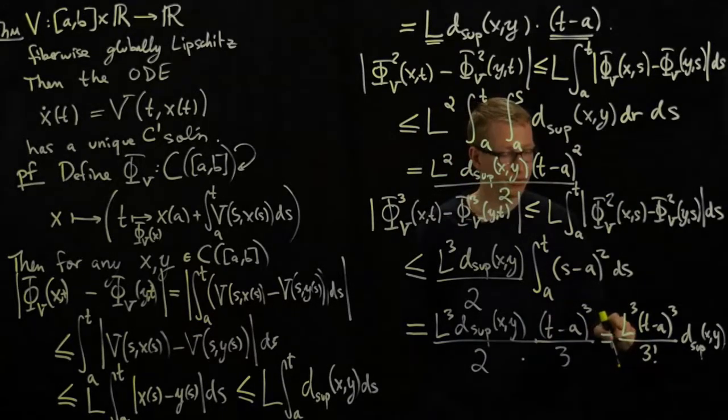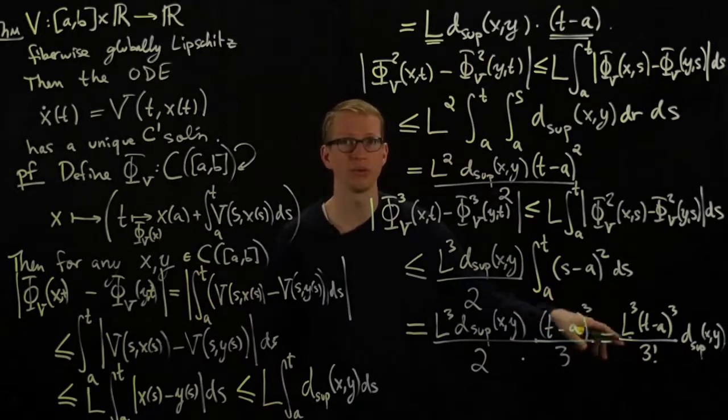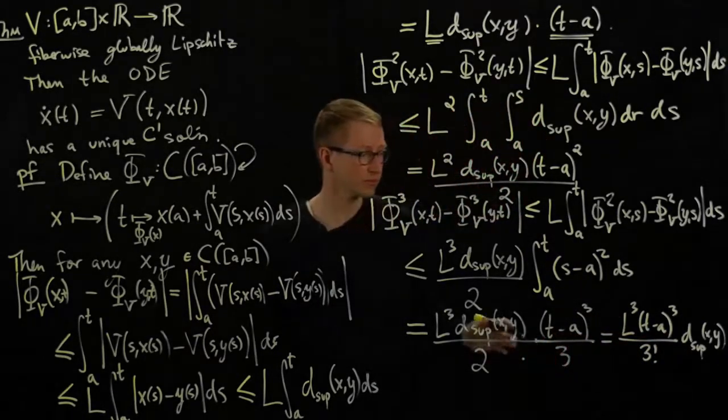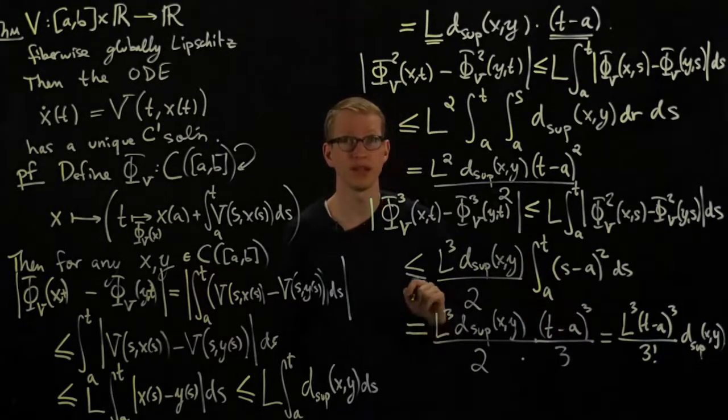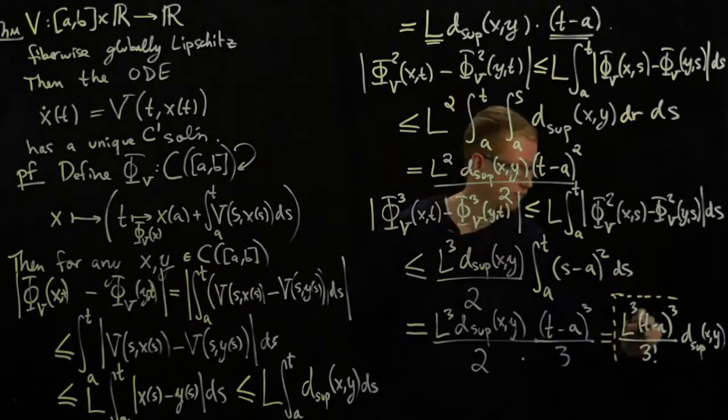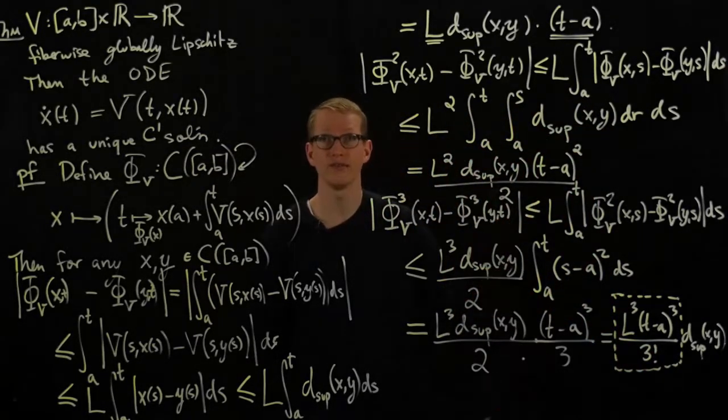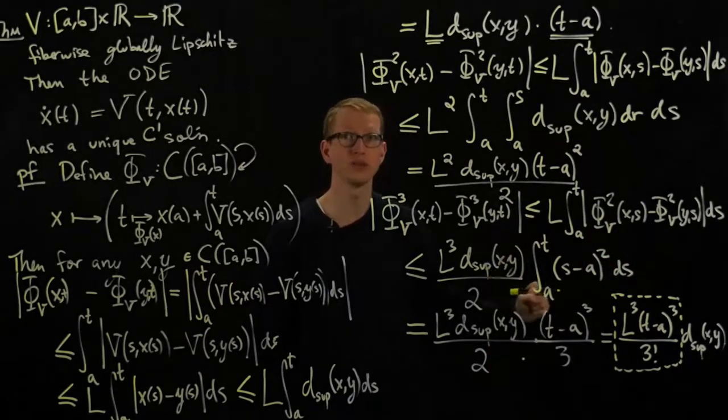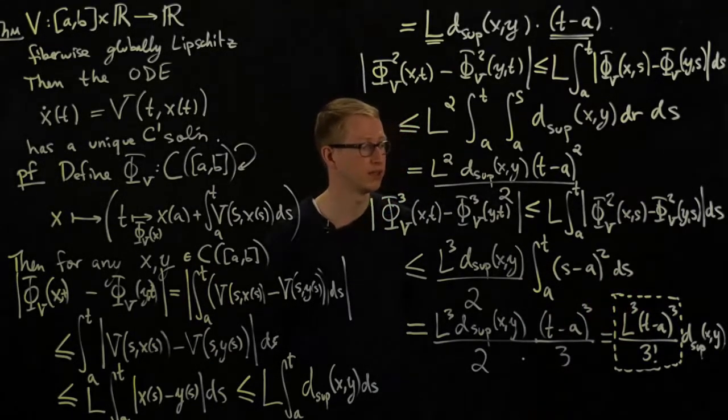Now, raising something to an nth power eventually gets overpowered by, no pun intended, by 1 over N factorial. And the N factorial grows much faster. So eventually, for any epsilon that I pick, I can find a large enough N so that this expression here is less than epsilon for all N greater than that value that I chose. But I might have to go very far out in the sequence to do this. But I can always do it for sure because the limit of this expression as N goes to infinity with 3 replaced by N does tend to 0.